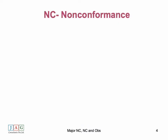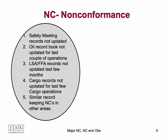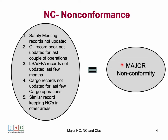You can also have non-conformities such as: safety meeting records not updated, record books not updated for the last couple of operations, LSA safety records not updated for the last few months, cargo records not updated for the last few cargo operations, and similar record-keeping NCs in other areas. While each of these is an isolated non-conformity in its own area, since all these non-conformities belong to a particular requirement — record keeping — the auditor can attribute all of them together and give a major non-conformity in record keeping and documentation.